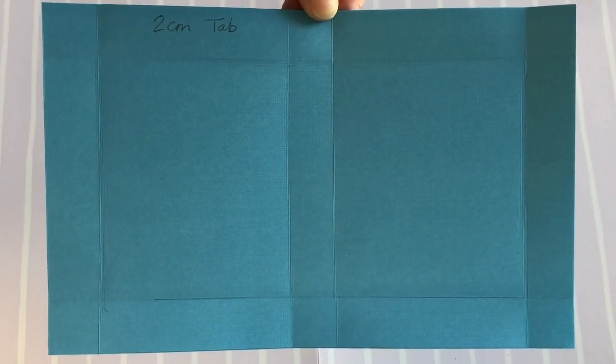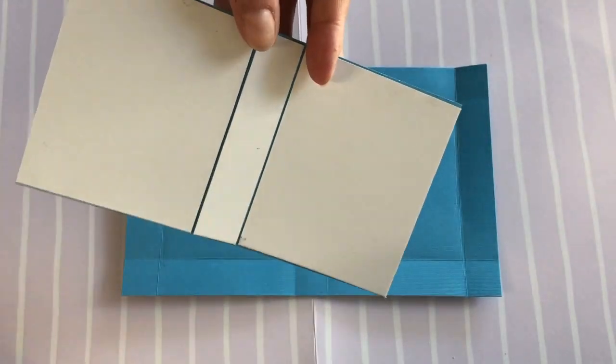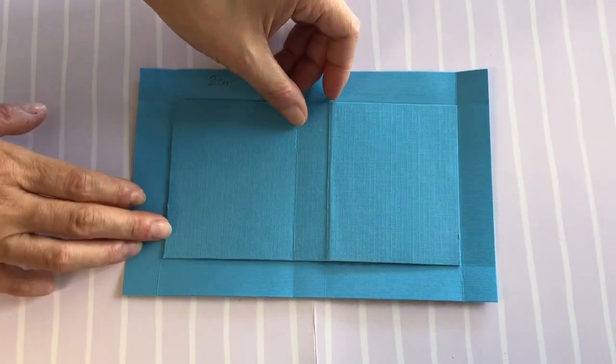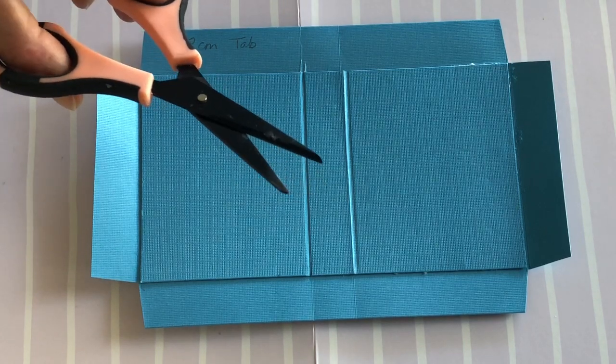Now, cut a larger rectangle of cardstock allowing a 2cm tab and adhere the binder to it good side up. Cut off the corners and glue down the tabs for a clean, neat finish.